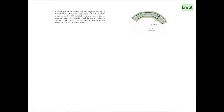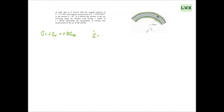In our last video, we defined our equations for acceleration and velocity. Velocity equals ṙ times u_r plus r·θ̇ times u_θ. And acceleration is defined as a equals (r̈ − r·θ̇²) u_r plus (2·ṙ·θ̇ + r·θ̈) in the θ direction. So with both of these, we have our r component and our θ component.